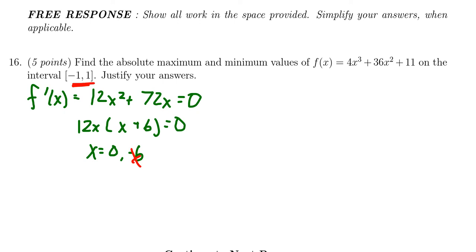Our critical numbers have to be between -1 and 1. So we're going to build a t-chart using the boundary points -1 and 1. We're also going to use the critical number 0, which lives inside that interval. And we have to evaluate the function, not the derivative, at those values.